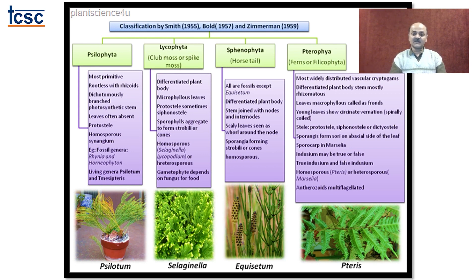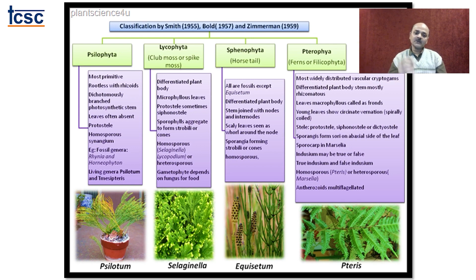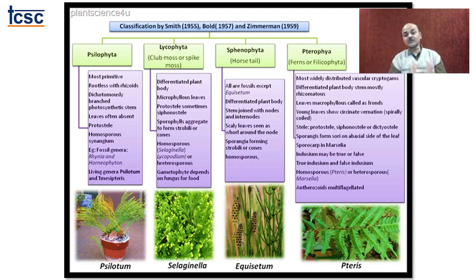Young leaves show circinate venation — spirally coiled — also called circinate ptyxis. The stele can be of different types: protostele, siphonostele or dictyostele. Protostele is primitive; types include haplostele, actinostele, plectostele and mixed stele. Siphonostele can be ectophloic and amphiphloic. Dictyostele is part of solenostele where the stele is broken into vasculature due to leaf traces or leaf gaps. Up to dictyostele we see all types in pteridophytes, while eustele is typical of dicot stems and atactostele of monocot stems.